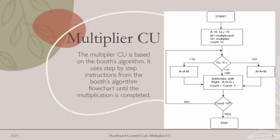The multiplier CU is based on Booth's algorithm. Booth's algorithm is a multiplication algorithm that multiplies two signed binary numbers in two's complement notation. What the multiplier CU actually does is use the step-by-step instructions from Booth's algorithm, as shown in the flowchart, until the multiplication is completed.